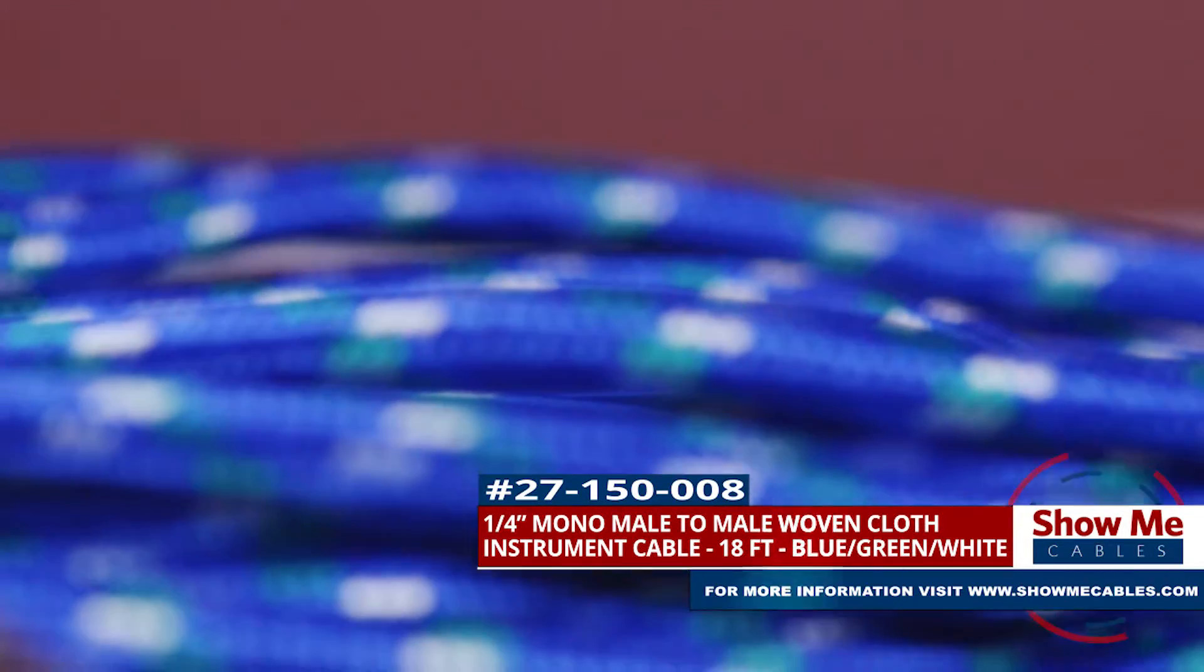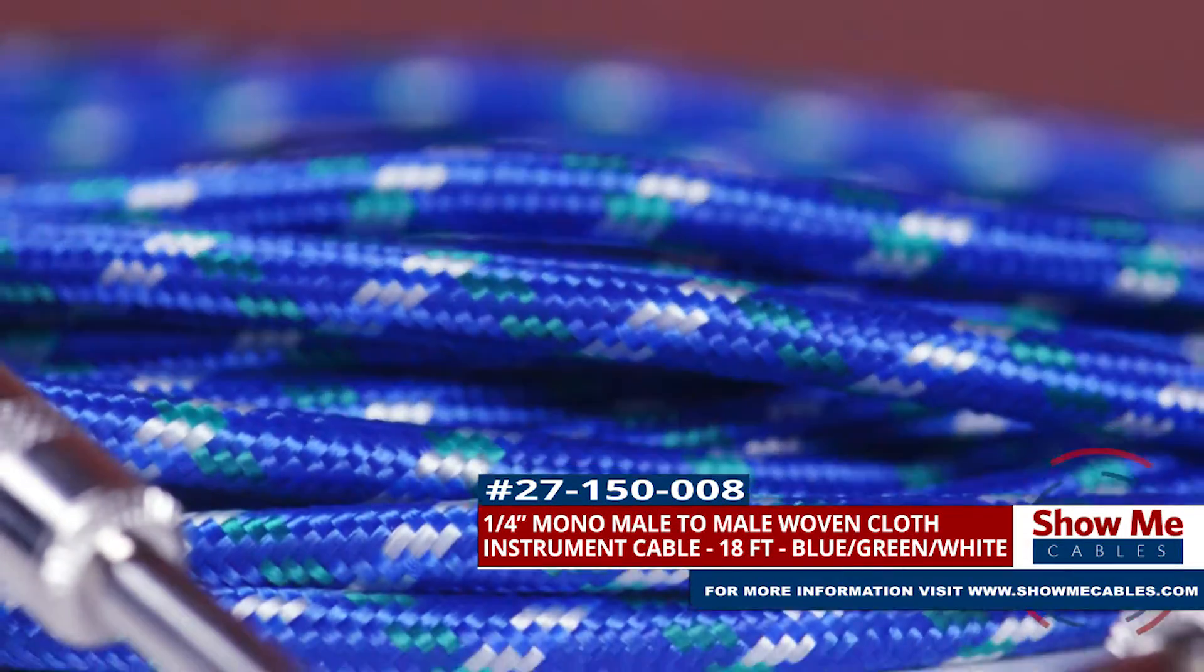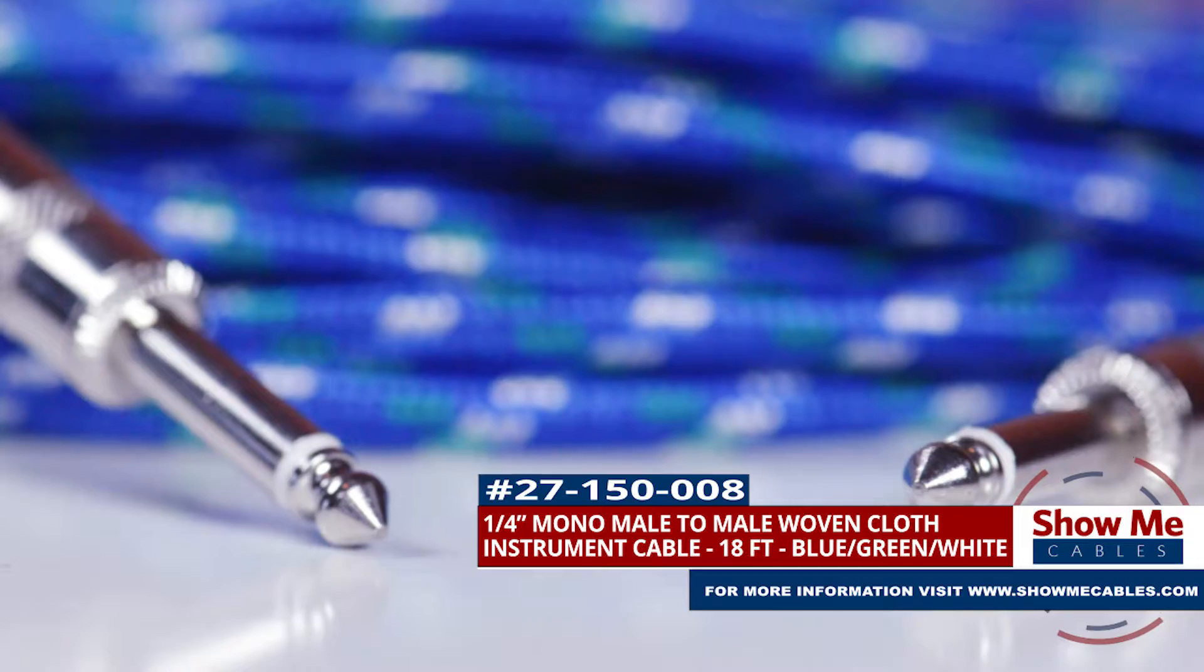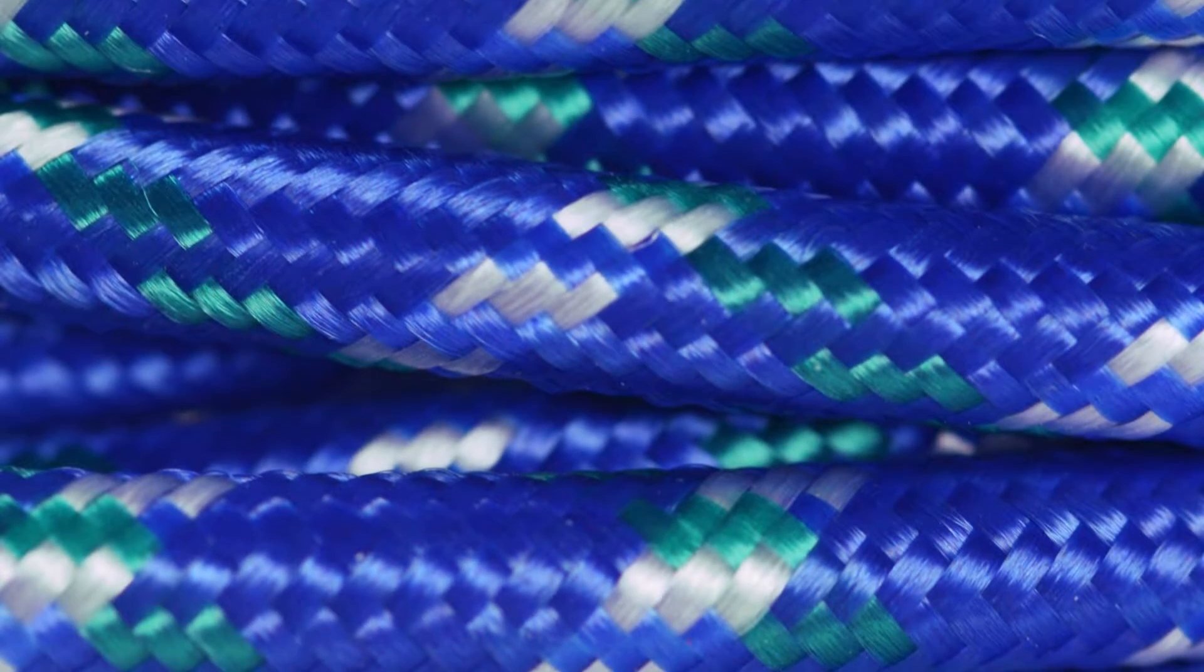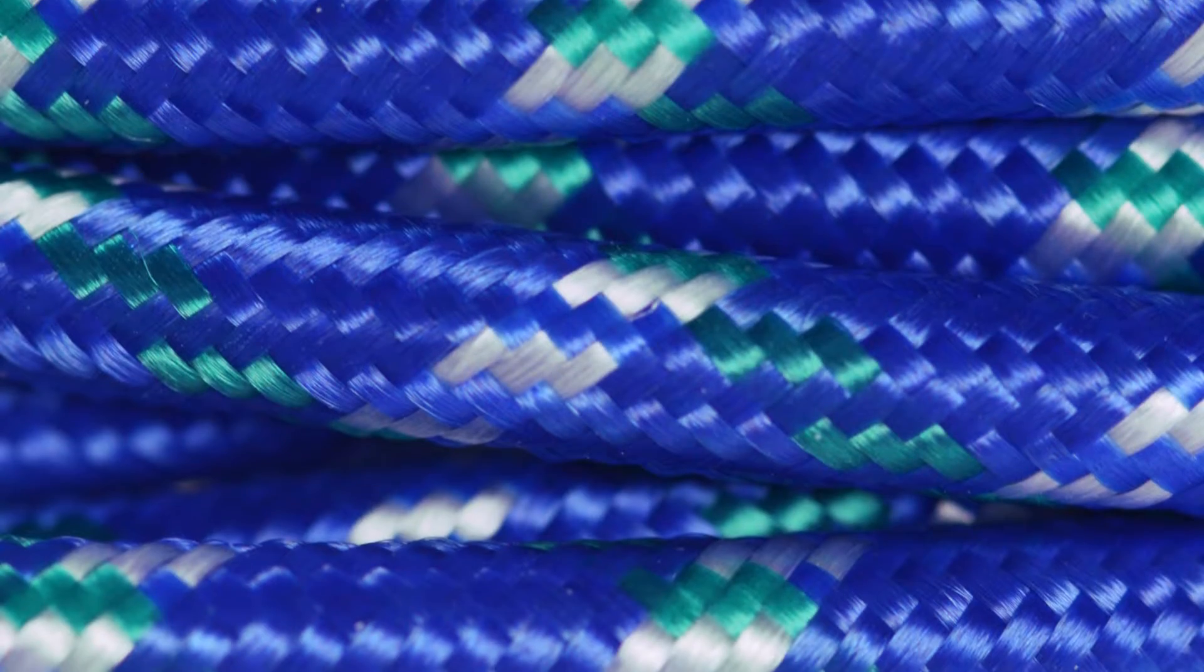This is the ProAudio ¼ inch mono male-to-male cable with woven cloth. The cable is 18 feet in length and features a blue, green, and white woven cloth jacket.